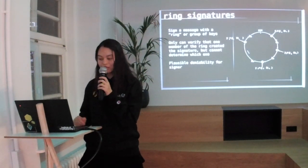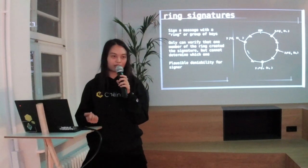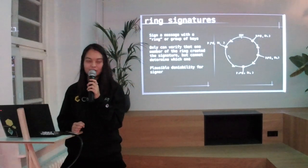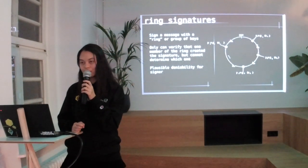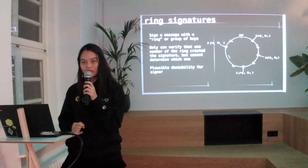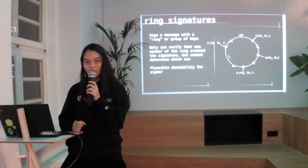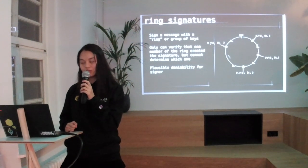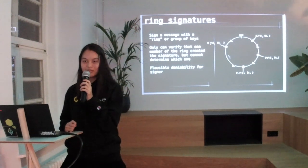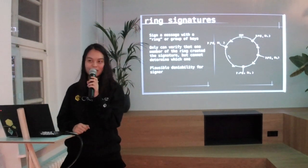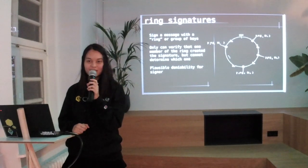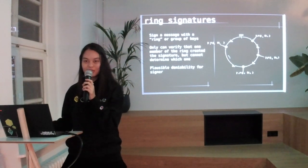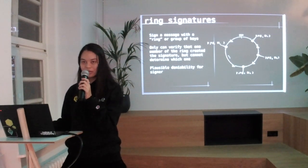A ring signature works like this: normally when you sign a transaction digitally, it's signed by one public key, so you know the signature came from a specific person. With a ring signature, the signature is created using a group of keys, and only one member of the group actually creates the signature, but once the signature has been formed, you can't tell from the outside who signed it. So if you sign a transaction this way instead of with just your own key, you'd be able to plausibly deny that you were involved in a transaction. This is part of the way Monero works.